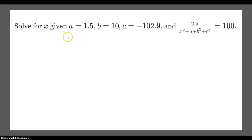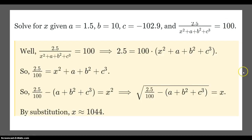We want to solve for x given a is 1.5, b is 10 — same problem: 2.5 over that quantity equals 100. We want to solve for x. This is how I wrote the condensed solution. We take this equation and rewrite it down here. We know this whole thing is true.